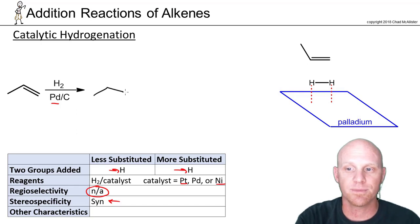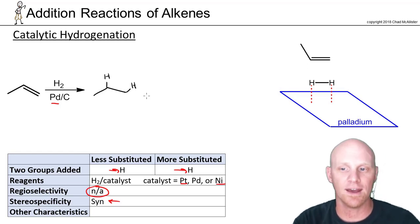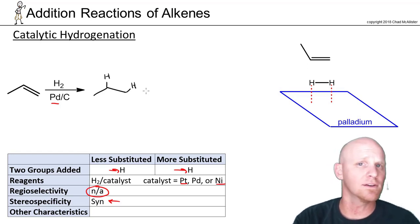But in this case, we're going to add a hydrogen to both sides. So both the less substituted side and the more substituted side each get a hydrogen. And so essentially, you're turning an alkene into an alkane. A lot of students just think it makes the alkene disappear. But keep in mind, you're adding two H's.